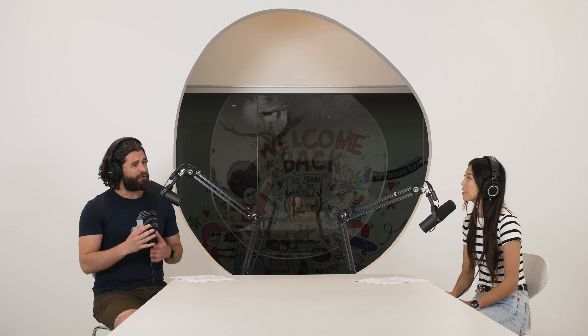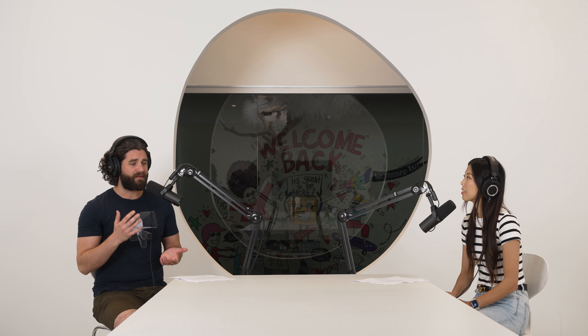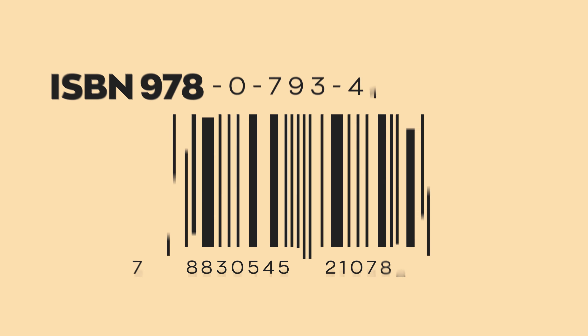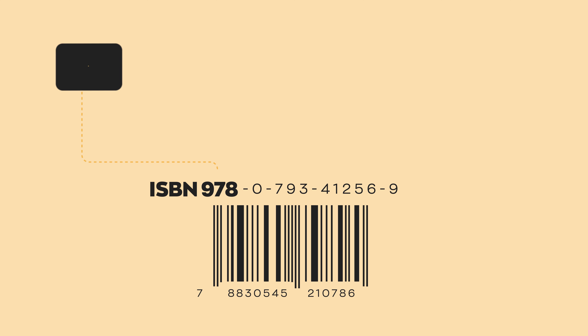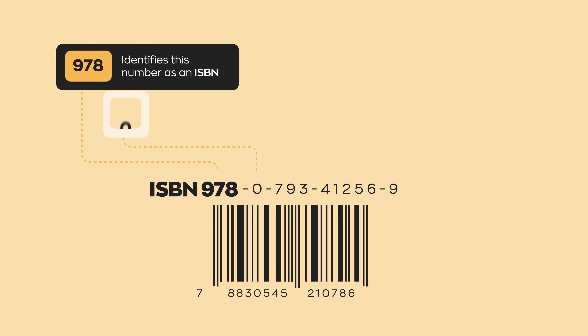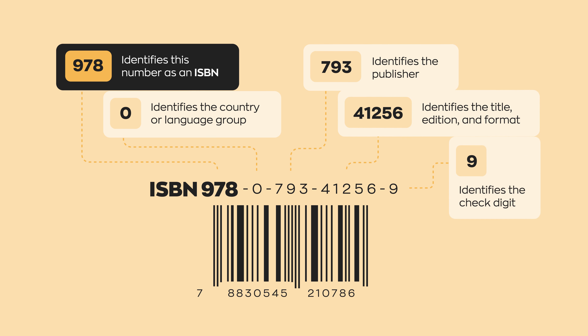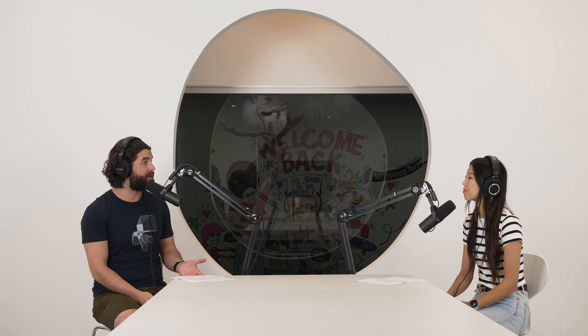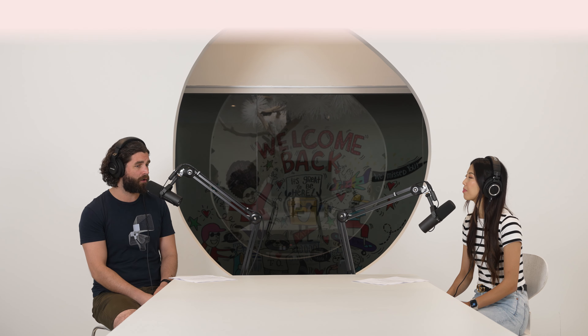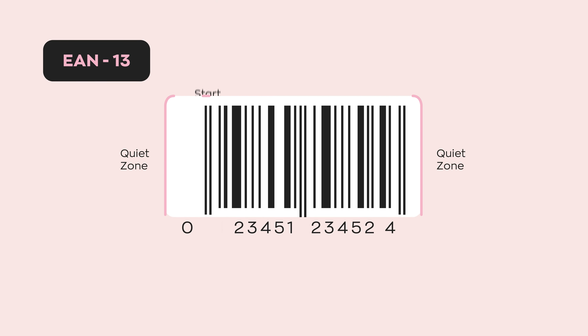Symbology is essentially just a different coding language. Different industries use different ones — for example, books have a specific barcode called the ISBN. The traditional ones you see in grocery stores are generally UPCs, universal product codes. There are also EANs, which are European article numbers.